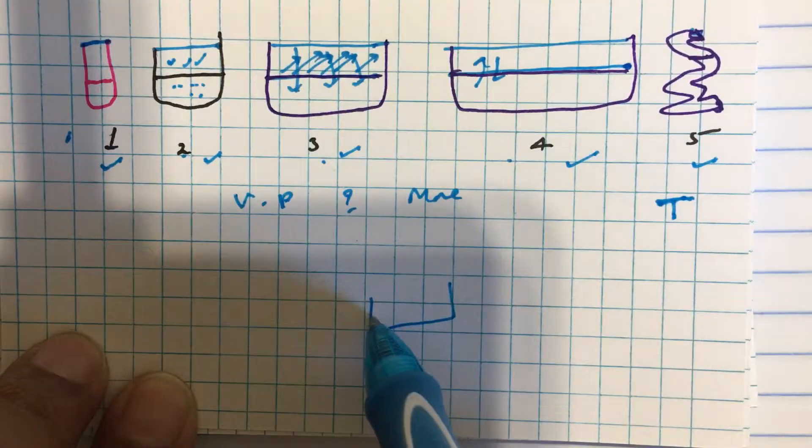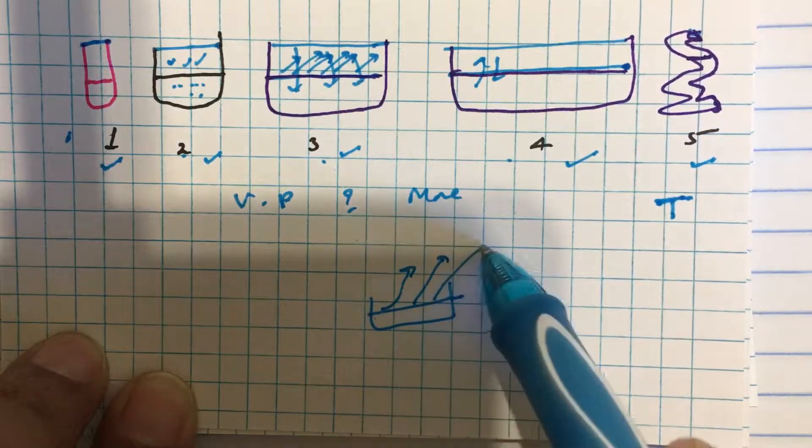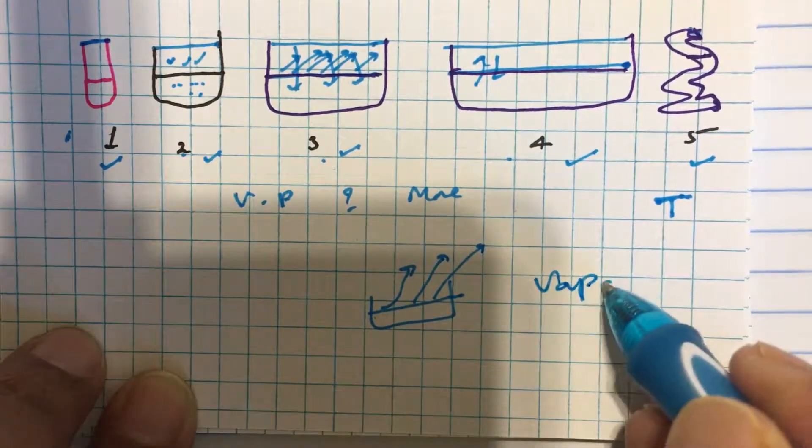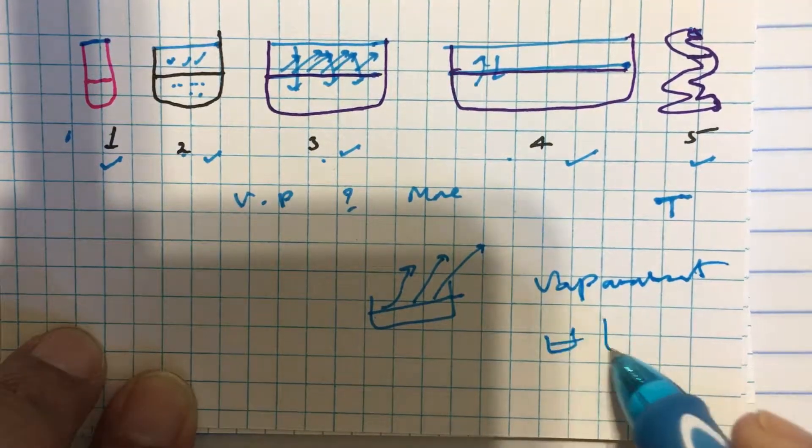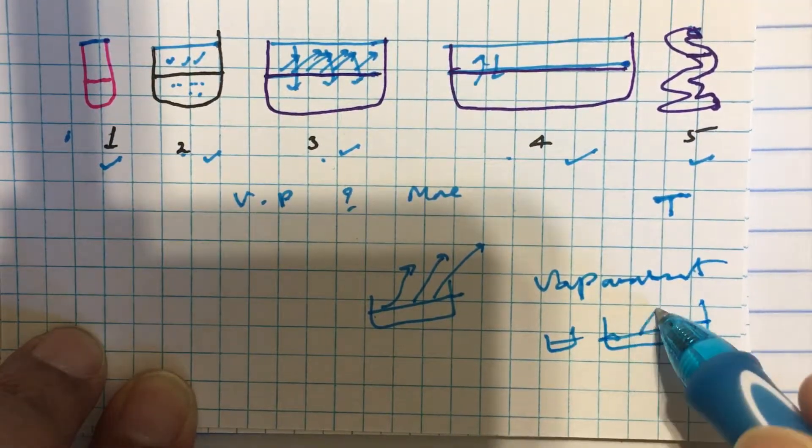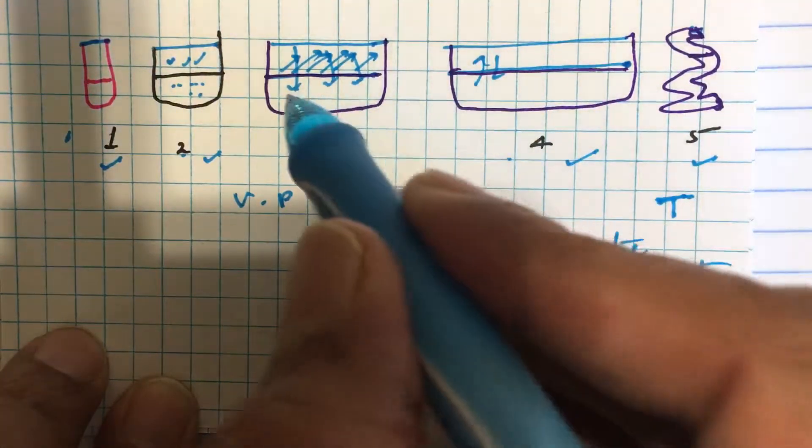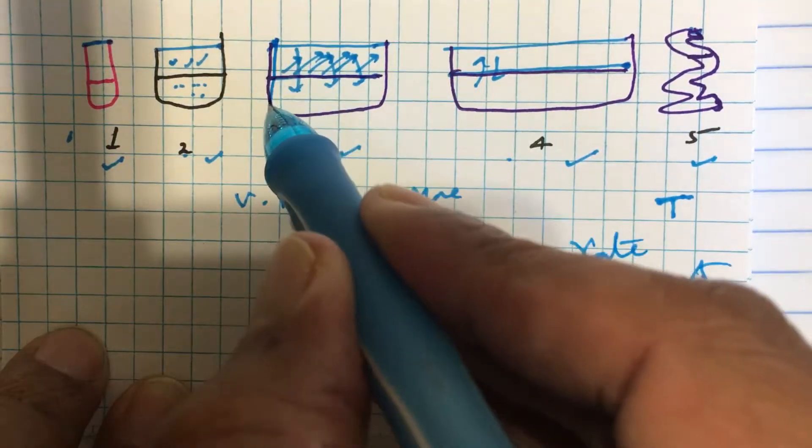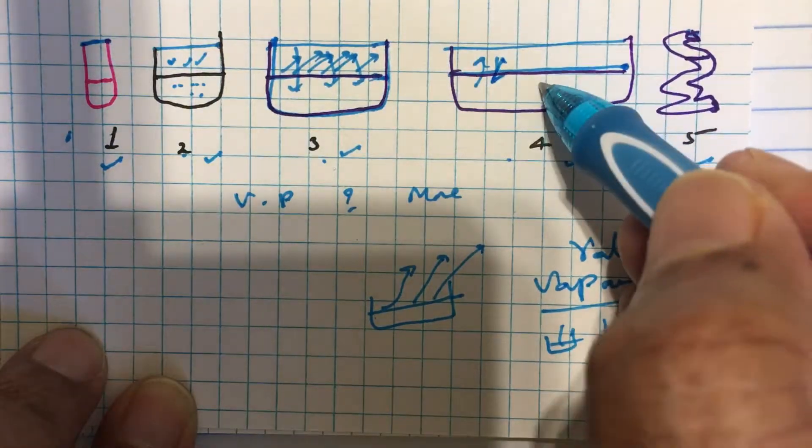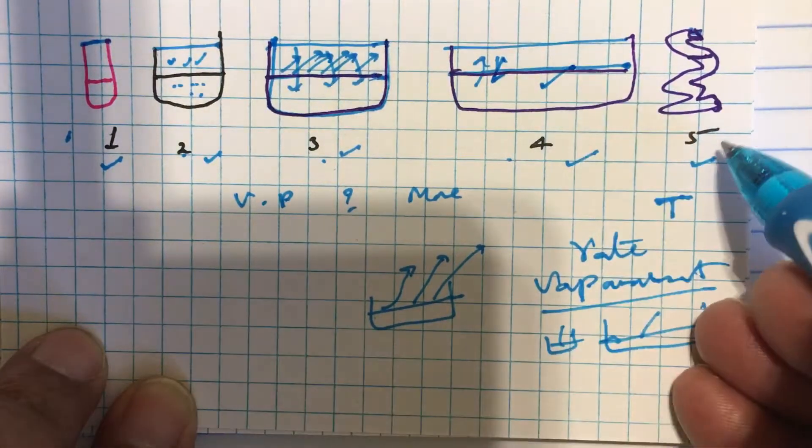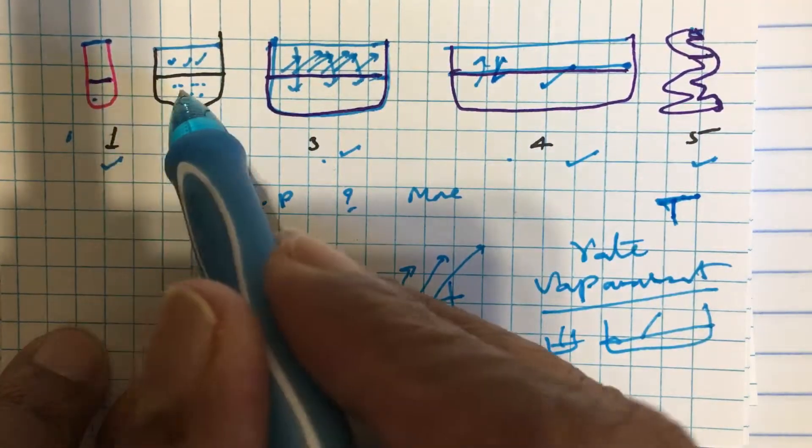In an open container, the tendency of a liquid to escape into vapor state from the surface is called vaporization. The rate of vaporization depends on surface area - more is the surface area, more is the rate of vaporization. But vapor pressure is a property of a liquid in a closed container. It is the equilibrium vapor pressure. It depends on the nature of the liquid and also it depends on the temperature.